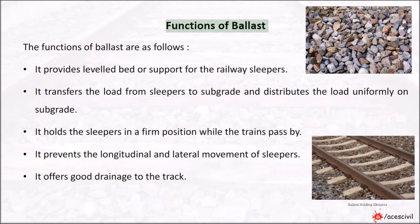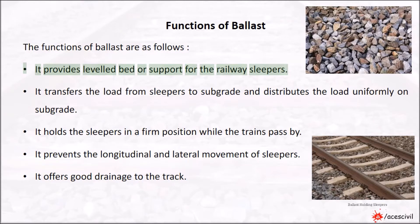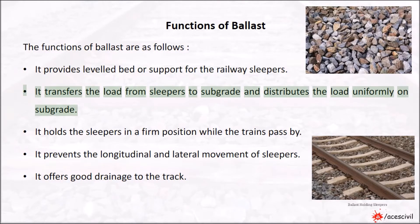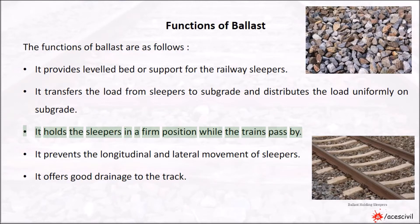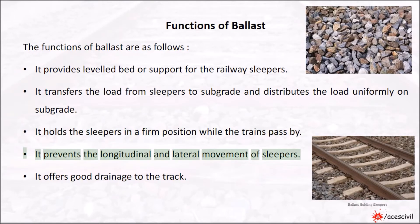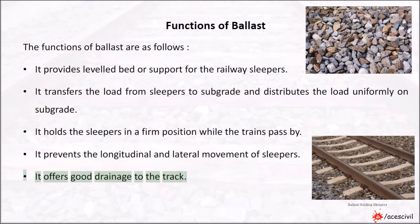Functions of ballast: The functions of ballast are as follows. It provides a leveled bed or support for the railway sleepers. It transfers the load from sleepers to the subgrade and distributes the load uniformly on the subgrade. It holds the sleepers in a firm position while the trains pass by. It prevents the longitudinal and lateral movement of sleepers. It offers good drainage to the track.